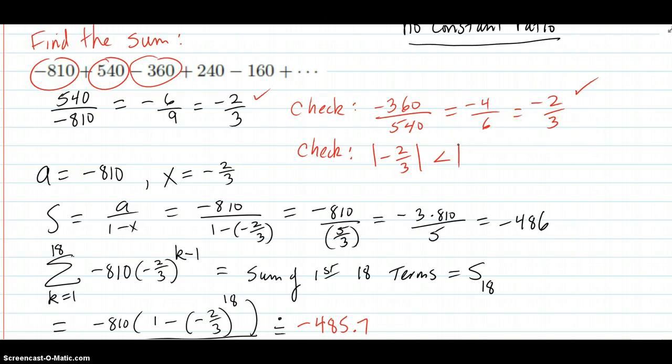To employ the sum of the infinite series, we need the constant ratio to be less than 1. And the constant ratio is negative 2 thirds. So that in absolute value is indeed less than 1. So that checks out.